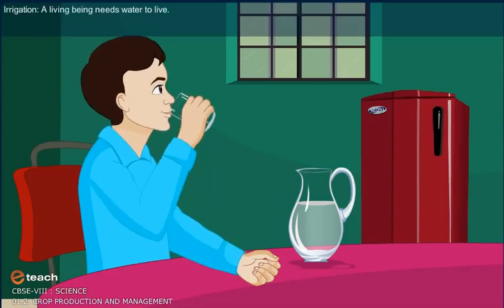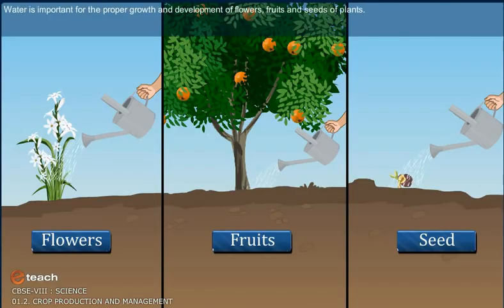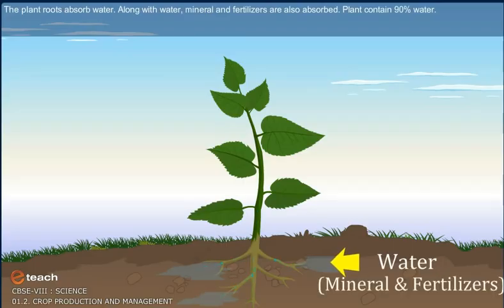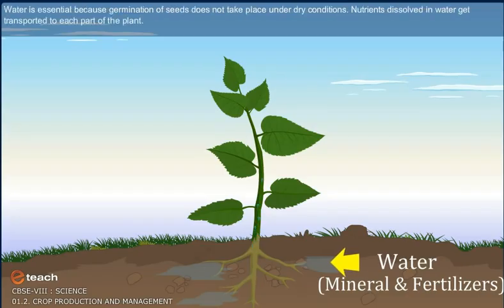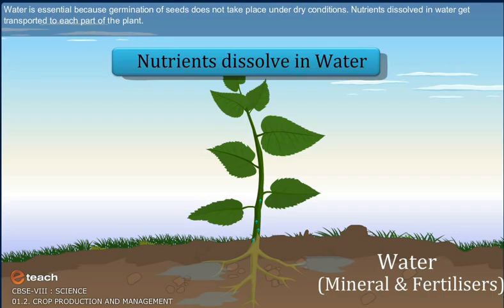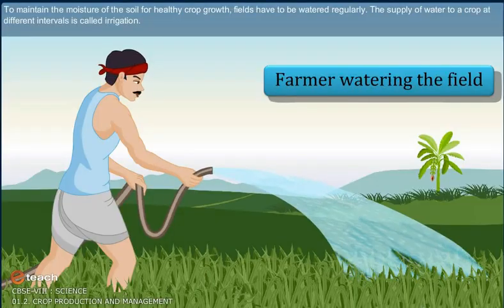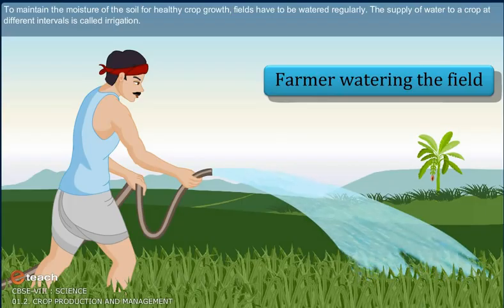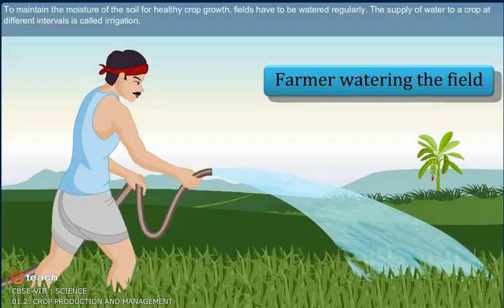Irrigation. A living being needs water to live. Water is important for proper growth and development of flowers, fruits and seeds of plants. The plant roots absorb water. Along with water, minerals and fertilizers are also absorbed. Plants contain 90% water. Water is essential because germination of seeds does not take place under dry conditions. Nutrients dissolved in water get transported to each part of the plant. To maintain the moisture of the soil for healthy crop growth, fields have to be watered regularly. The supply of water to crops at different intervals is called irrigation.